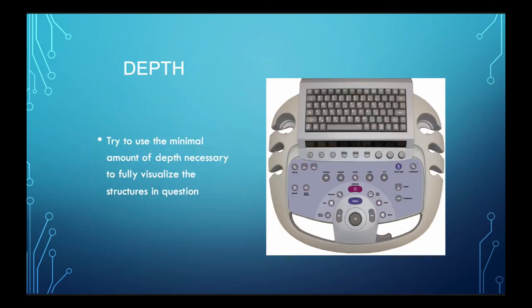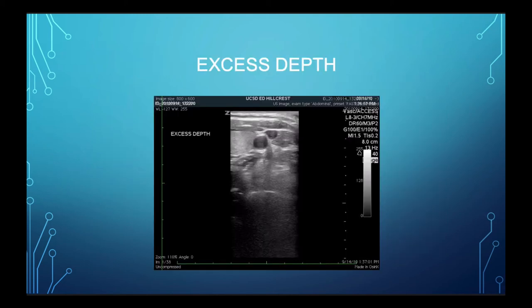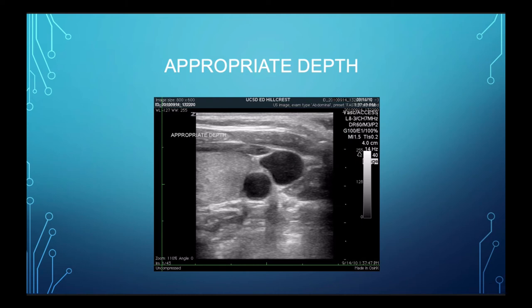Depth is something we should also look at every time we're looking at any image. You should adjust the depth so that the image you're looking at is in the center of the screen and optimize the image detail of the structure of interest. Always try to use the minimal amount of depth necessary to capture the entire structure you want to look at so that you can see it more clearly. Here's an example of excess depth — these two vascular structures are at the top of the screen, but we have a lot of wasted space below, which makes it less visible. A more appropriate depth is also helpful if you're doing procedures because you can see the needle with more precision if you get rid of that excess depth.